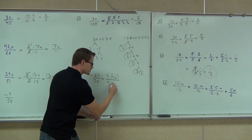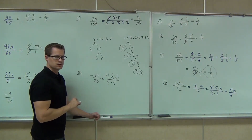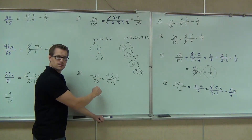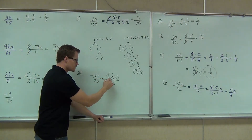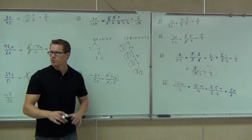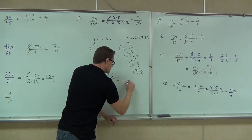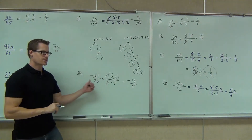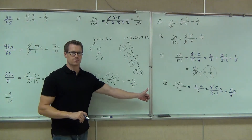So we know that negative 64 is 4 times negative 16. 20 is 4 times how much? 5. Can we cross anything out? The 4s — they are being multiplied. We have the same numbers, so let's cross them out. What do we have remaining? Negative 16 over 5. Just don't lose that negative. Notice how the negative could have just been left out front the whole time — either way is fine.